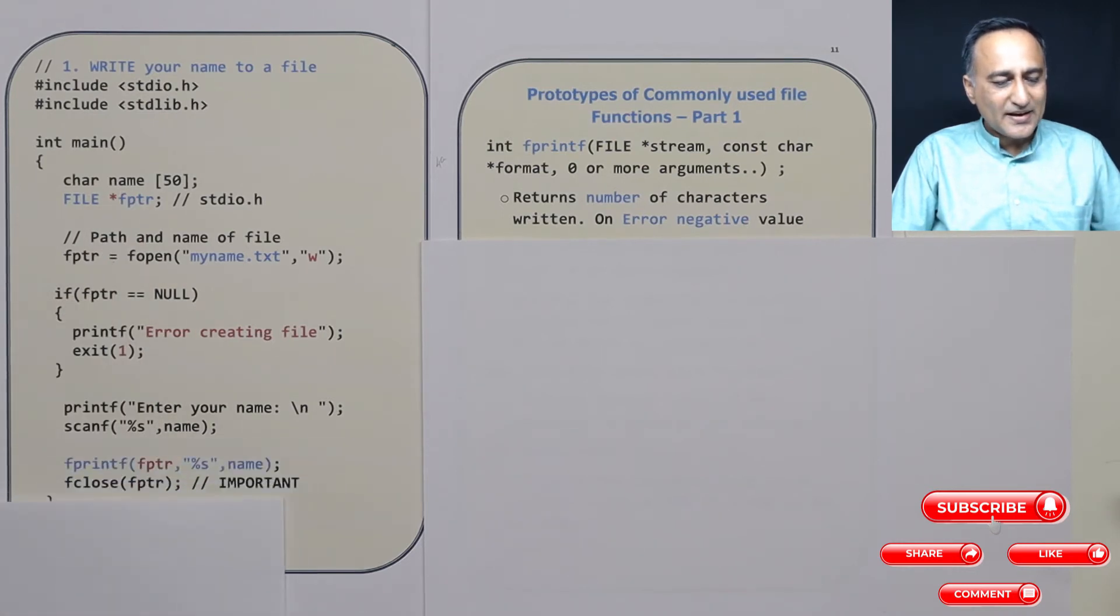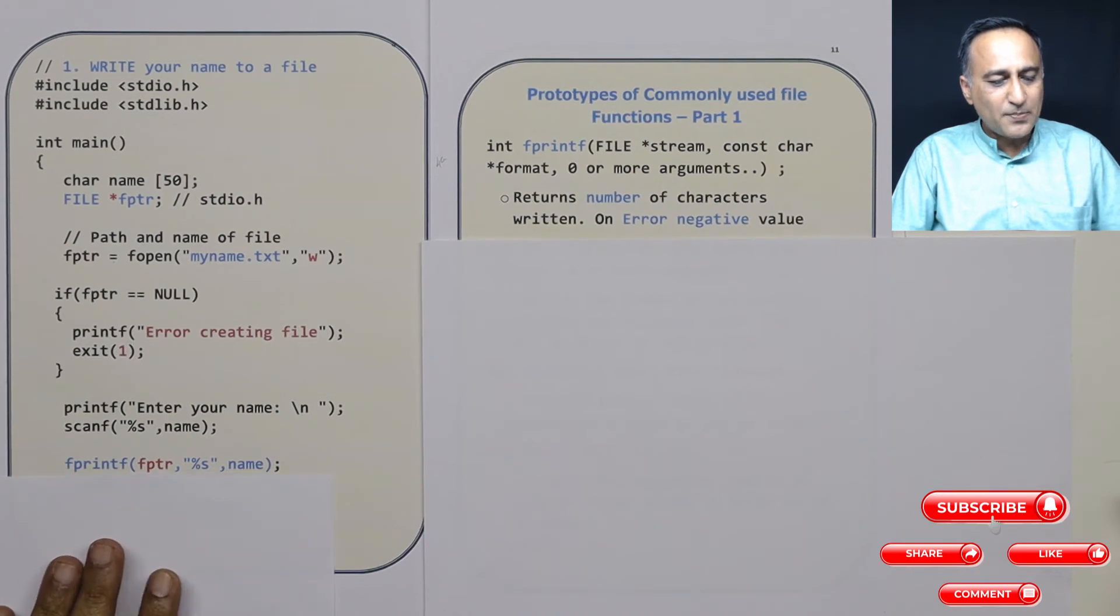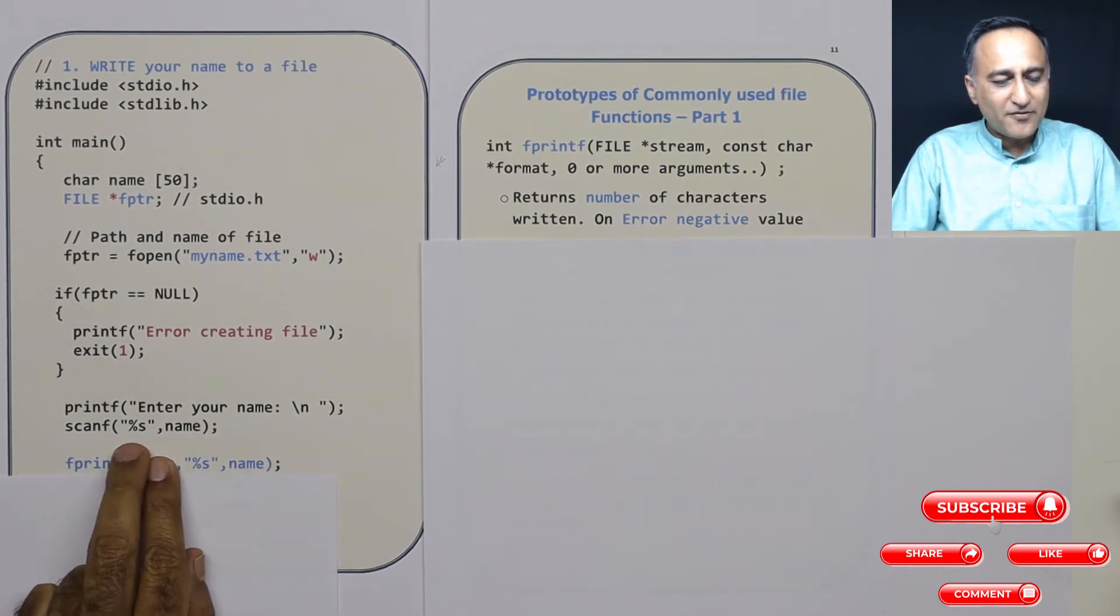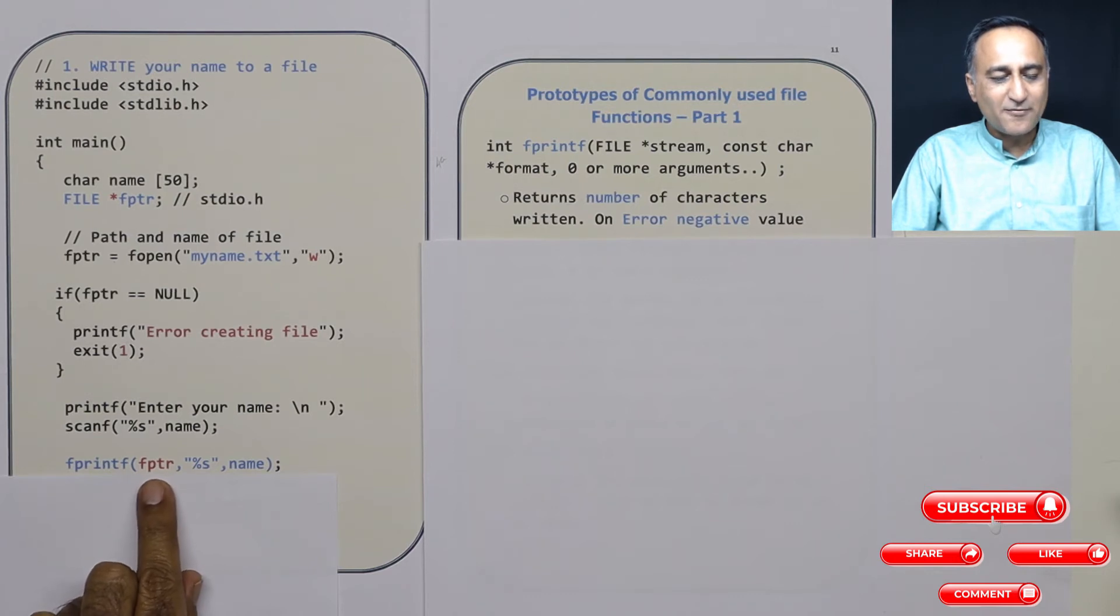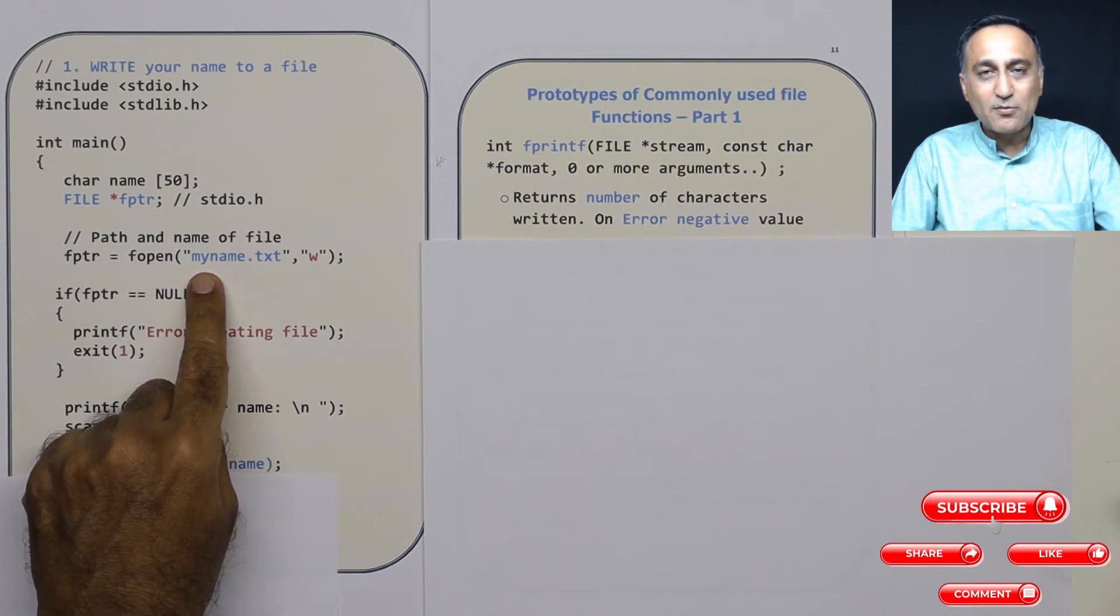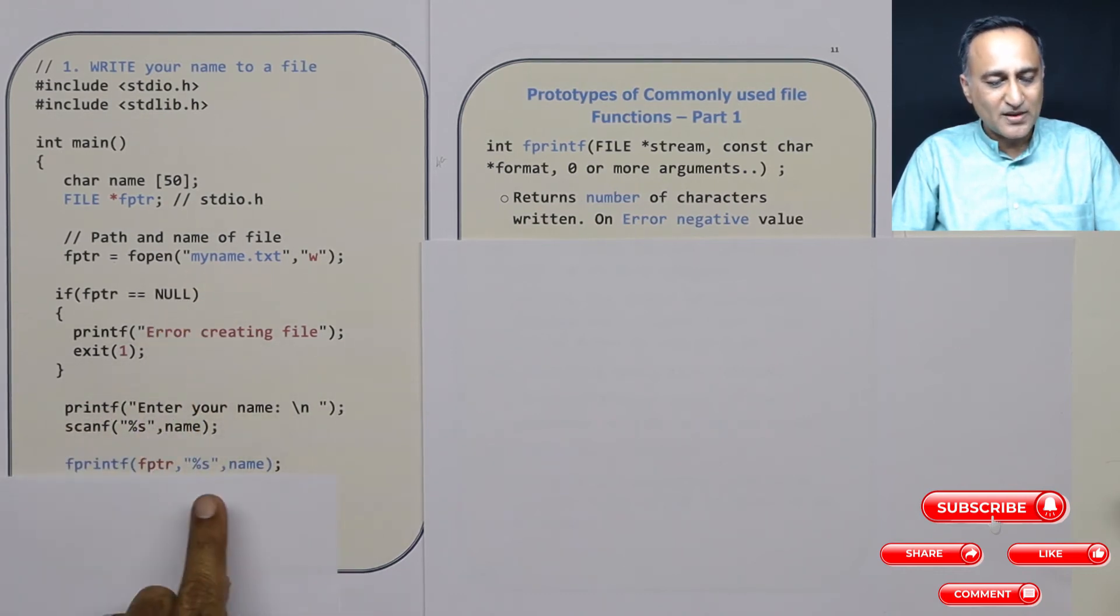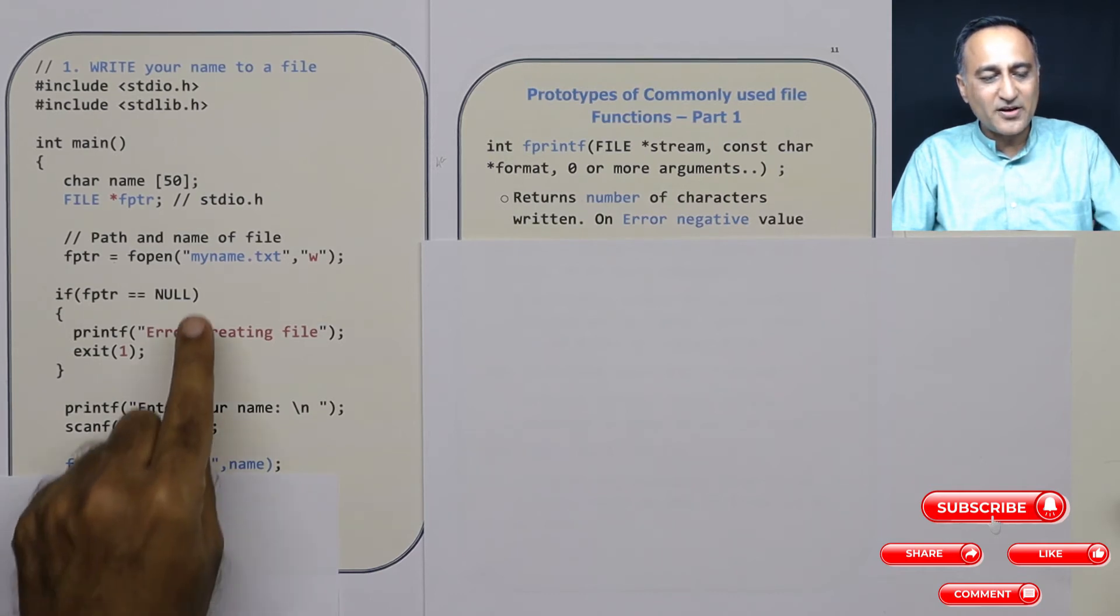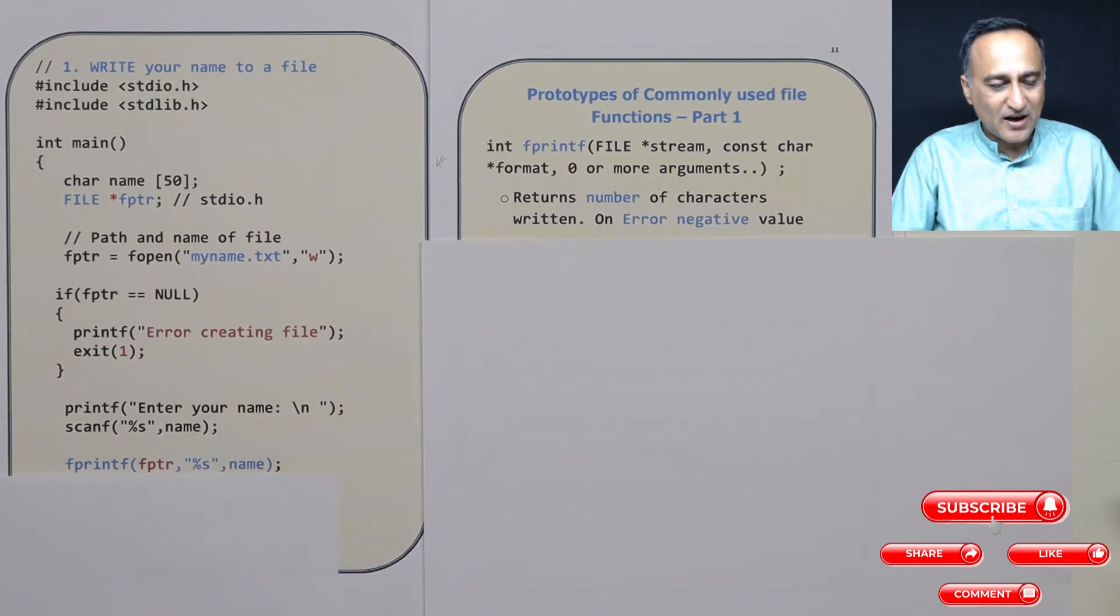Then take a look at fprintf. fprintf has three parameters. Normally if you are using printf you will just have %s and name. Here you have an additional parameter called fptr. This represents the file pointer. File pointer has link to the name of the file, the location of the file, and so on. So whatever name I have entered as Arjun, I am indicating that it is a string. %s indicates a string. That name is taken and written into the location referred by fptr. fptr is referring to the name myname.txt on my hard disk.